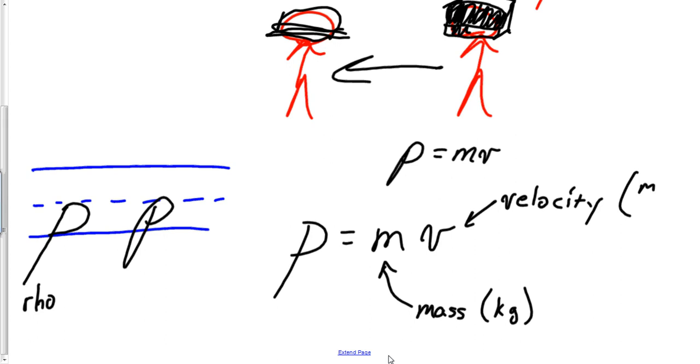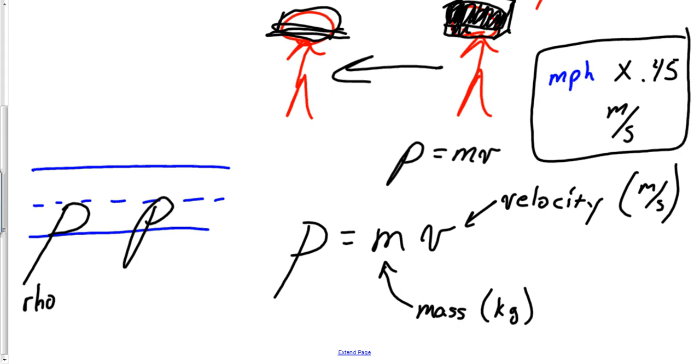Velocity should be in meters per second. If you're ever doing a problem and it gives you miles per hour, if you want to do a quick conversion to meters per second, just times that by 0.45. That's a pretty handy little conversion to remember. Anytime we have miles per hour and you need meters per second, times by 0.45 and you fix that.